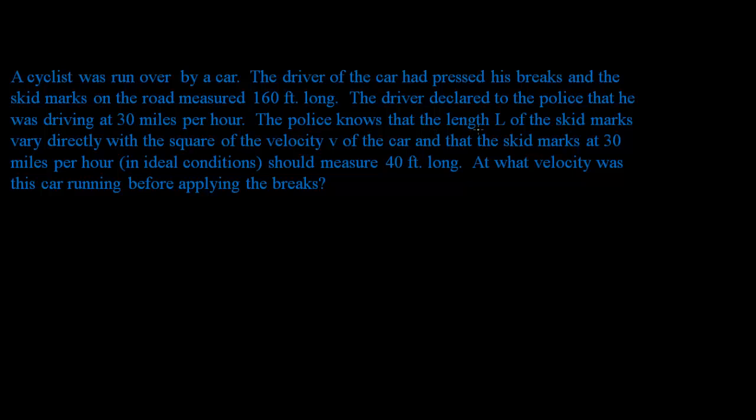The police knows that the length L of the skid marks vary directly with the square of the velocity V of the car and that the skid marks at 30 miles per hour in ideal conditions should measure 40 feet long. At what velocity was this car running before applying the brakes?